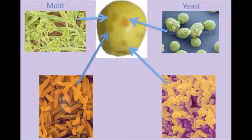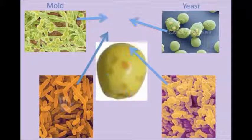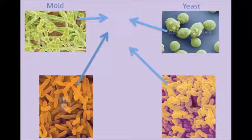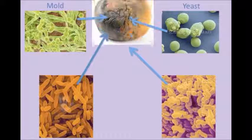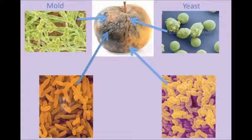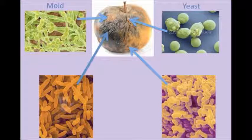On the outside, the apple is slowly getting softer and softer as the bacteria macerate the cells inside. Eventually, the molds, yeast, and bacteria devour the cells in the apple until there is nothing left. Next thing you know, you're in the kitchen looking for an apple, but all you see is this.